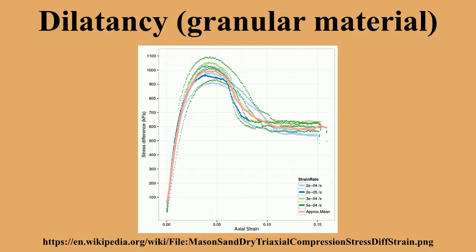Because of dilatancy, the angle of friction increases as the confinement increases until it reaches a peak value. After the peak strength of the soil is mobilized, the angle of friction abruptly decreases. As a result, geotechnical engineering of slopes, footings, tunnels, and piles in such soils have to consider the potential decrease in strength after the soil strength reaches this peak value.